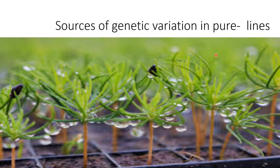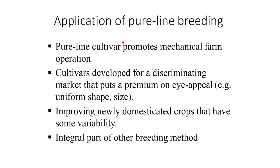Sources of genetic variation in pure line include: gene mutation, which creates variability and occurs at different rates for different loci; alleles of the same locus mutate at variable rates; and natural crossing and recombination, which create new gene combinations.